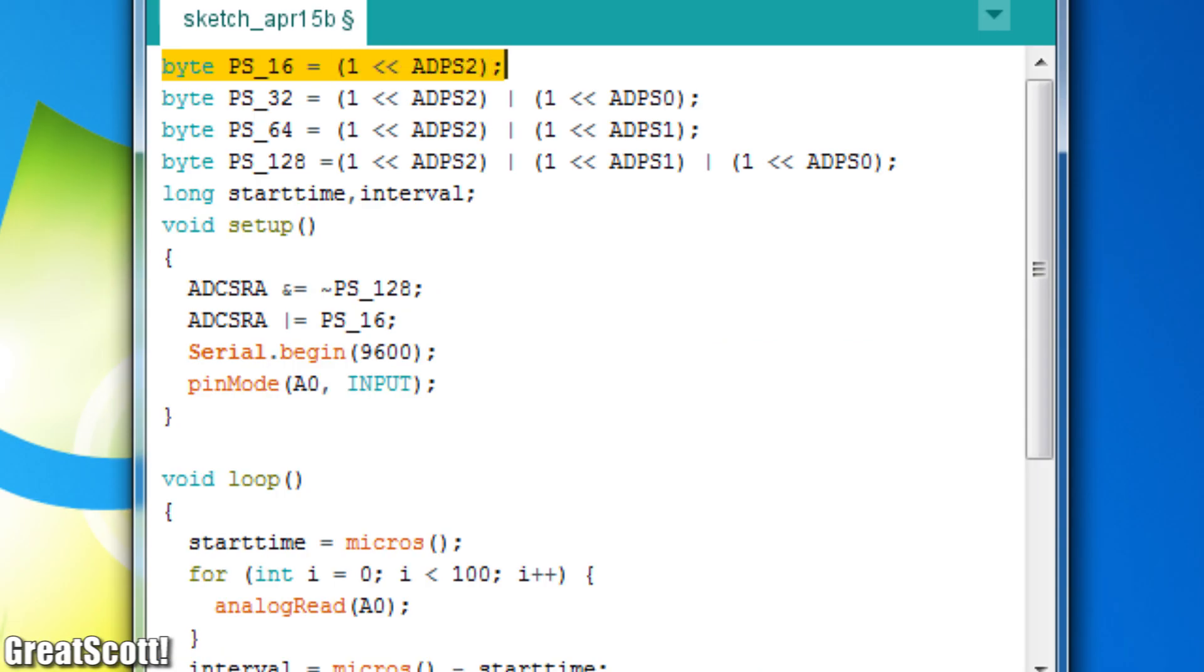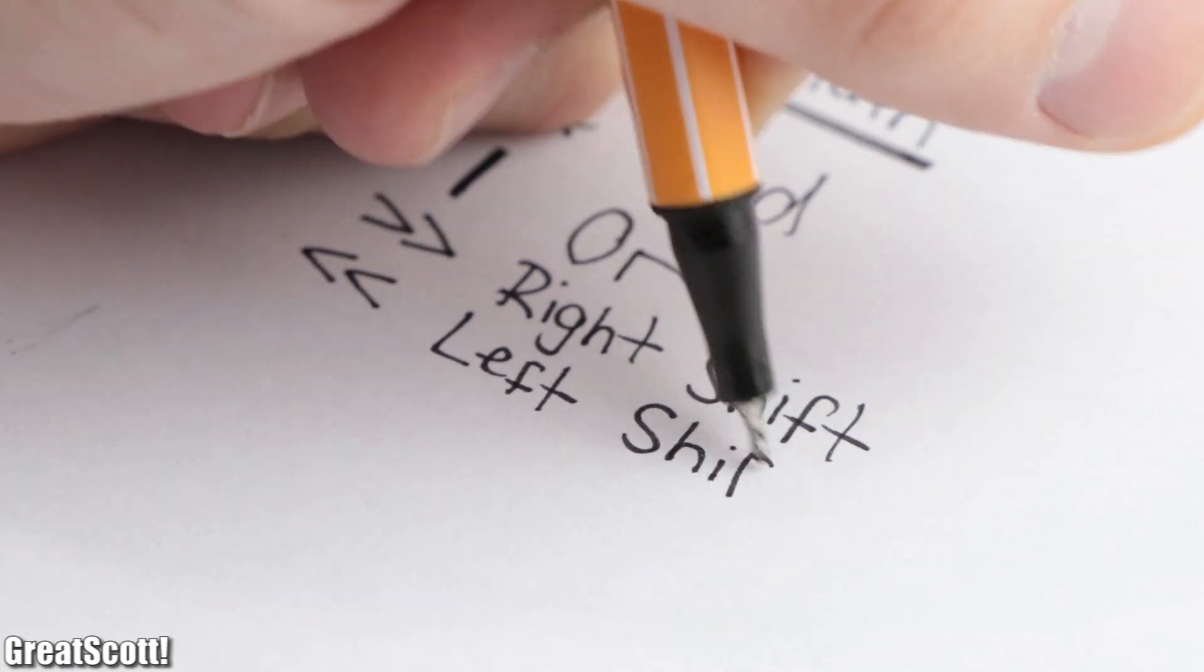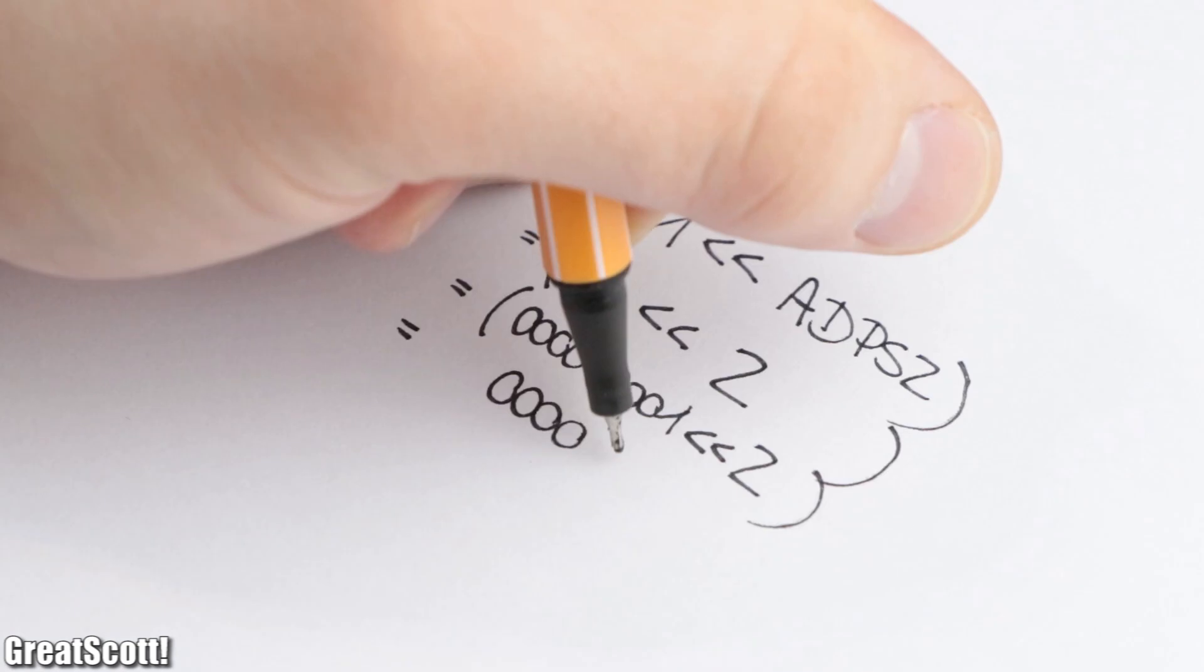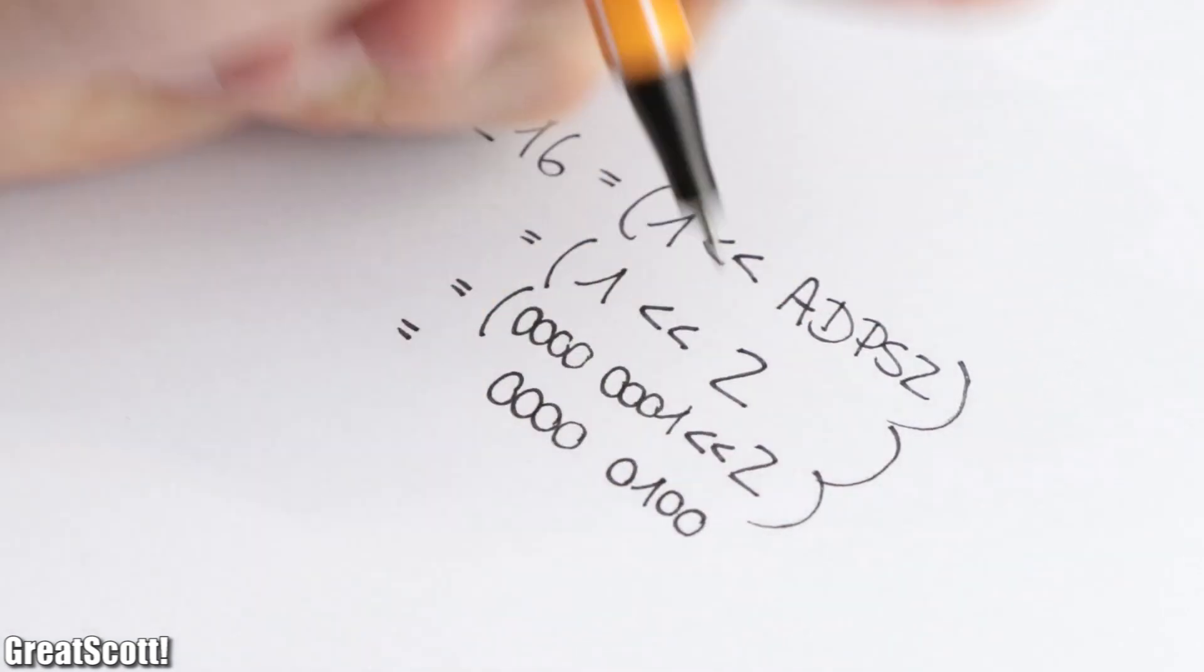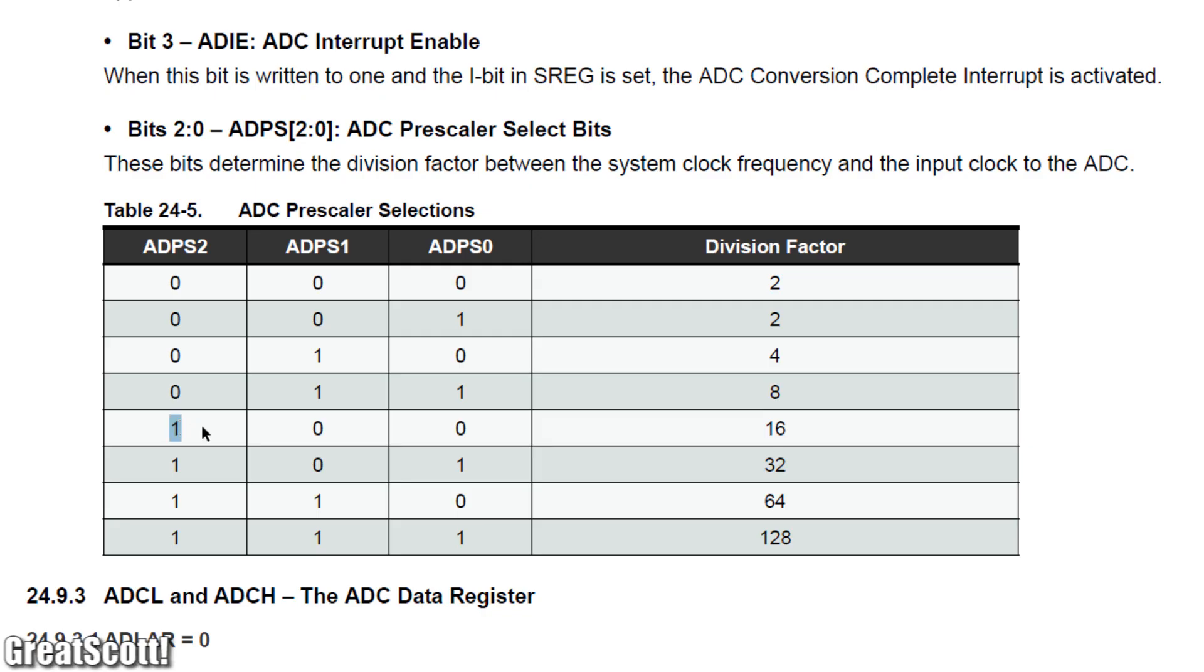Now the byte PS16 basically uses the left shift bit math operator to move the 1 to the position of the ADPS2 bit, which needs to be a 1 in order to set the prescaler to 16.